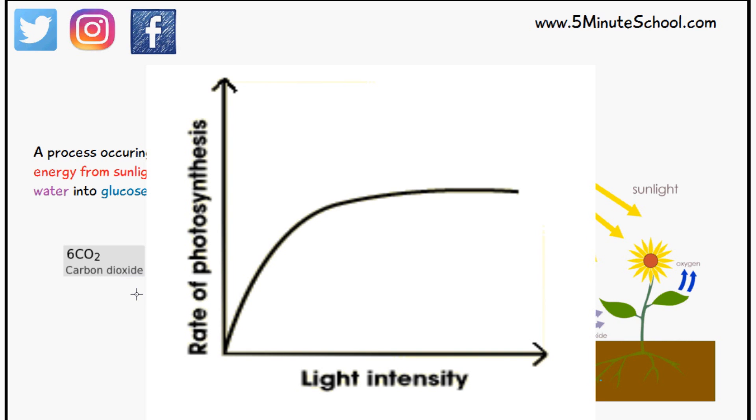Another factor includes the amount of light available. So regardless of how much carbon dioxide and water the plant has available, if there's not enough sunlight, which provides the energy for this conversion or this chemical reaction, the rate of photosynthesis will not be as fast.